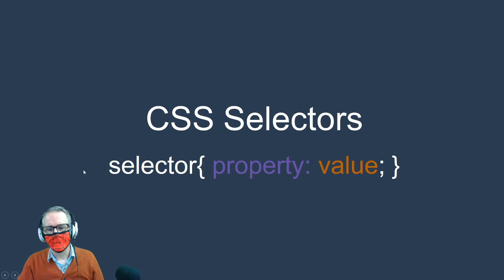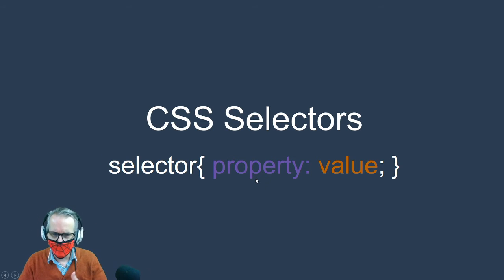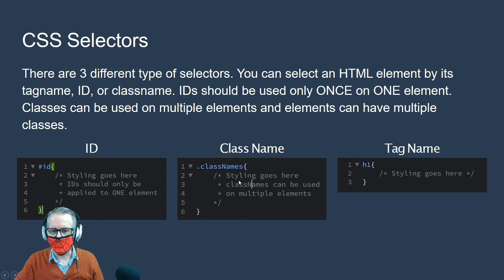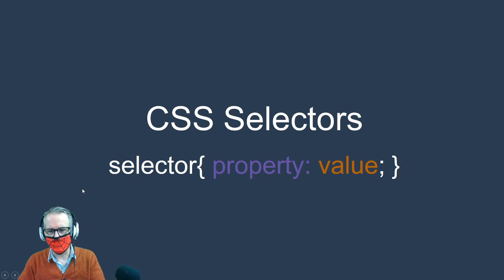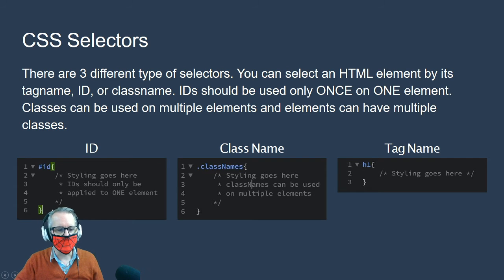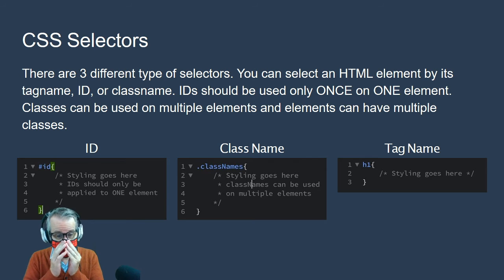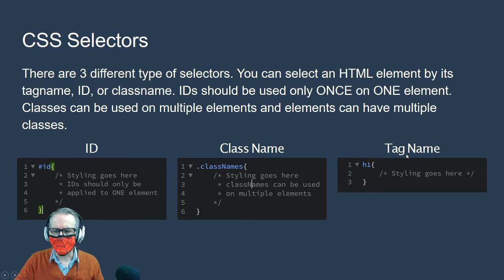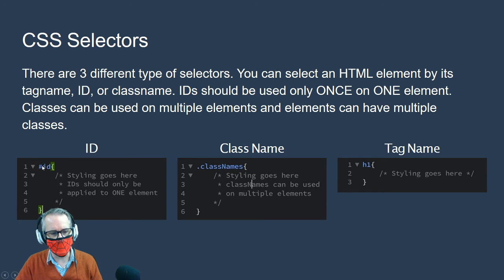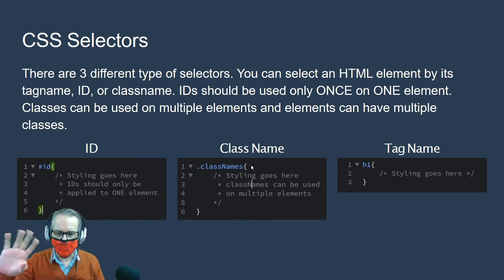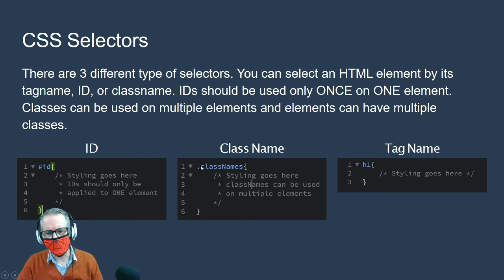If you're only changing one CSS property you can put it all on one line, but if you're changing more than one thing, put each property-value pair on its own line inside the curly braces. The three CSS selector types are: an ID (used only once, marked with a hashtag/pound sign), a class (used multiple times, marked with a dot/period), and a tag selector (applies to all instances of that tag, like h1).